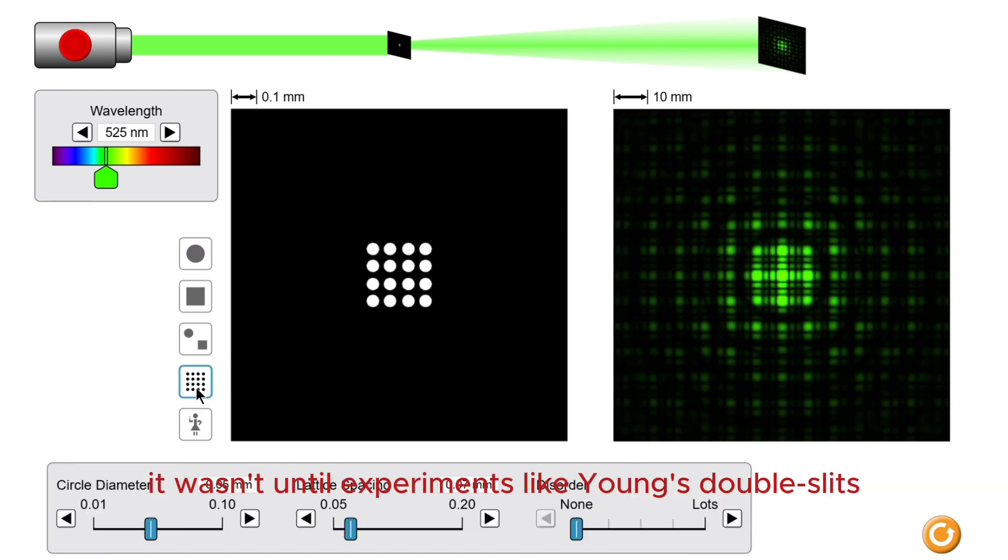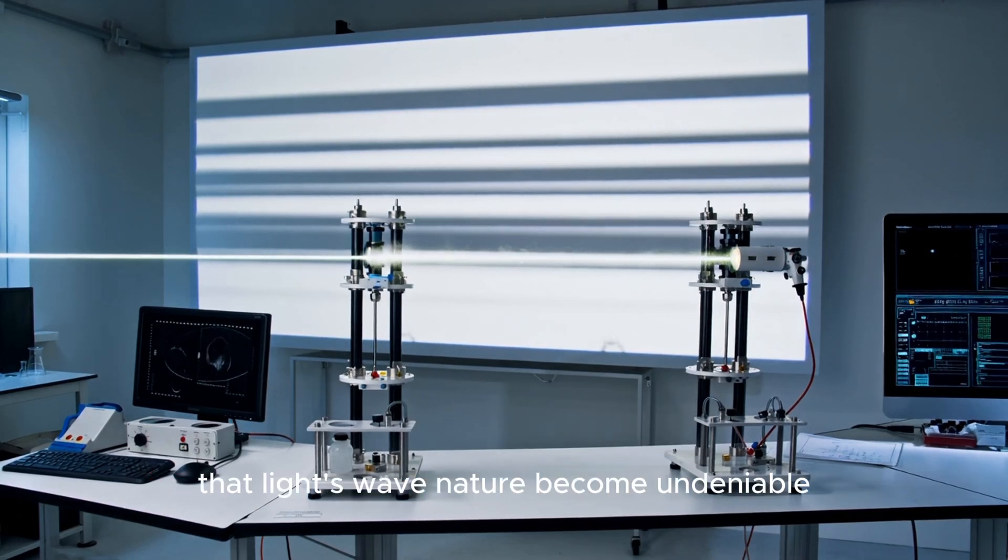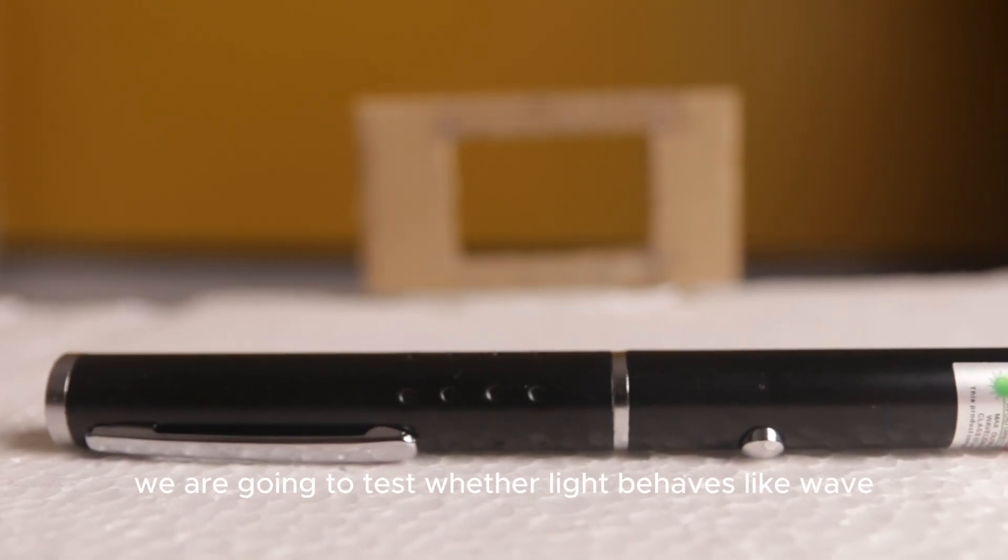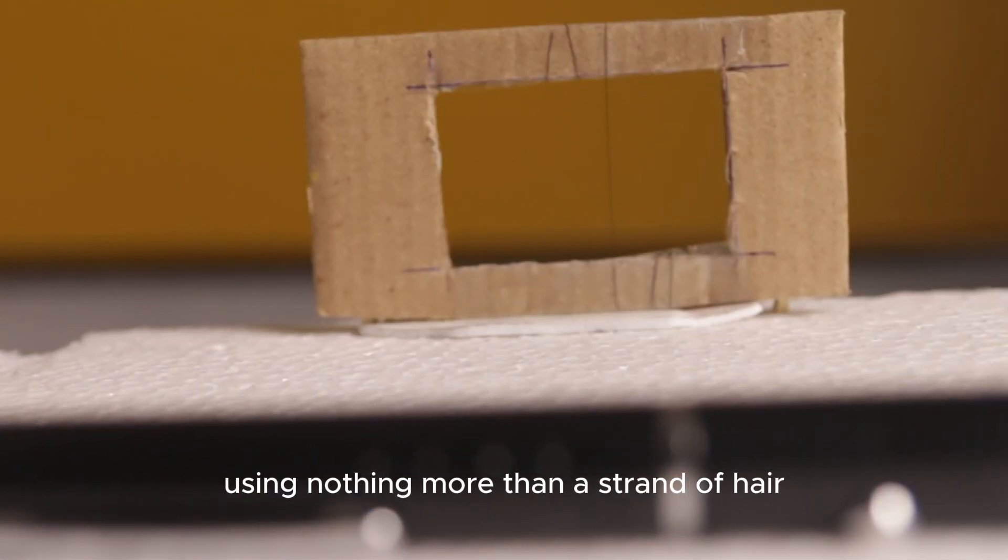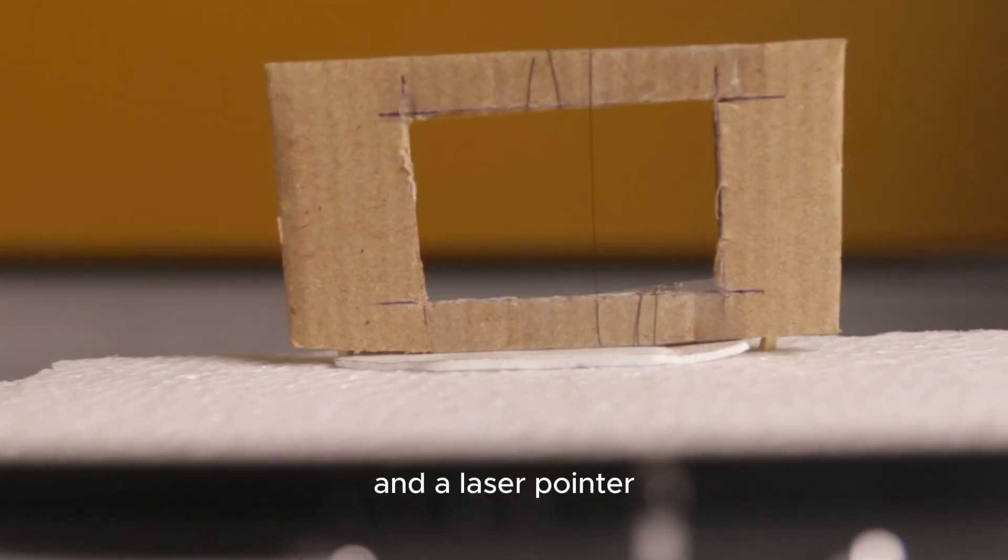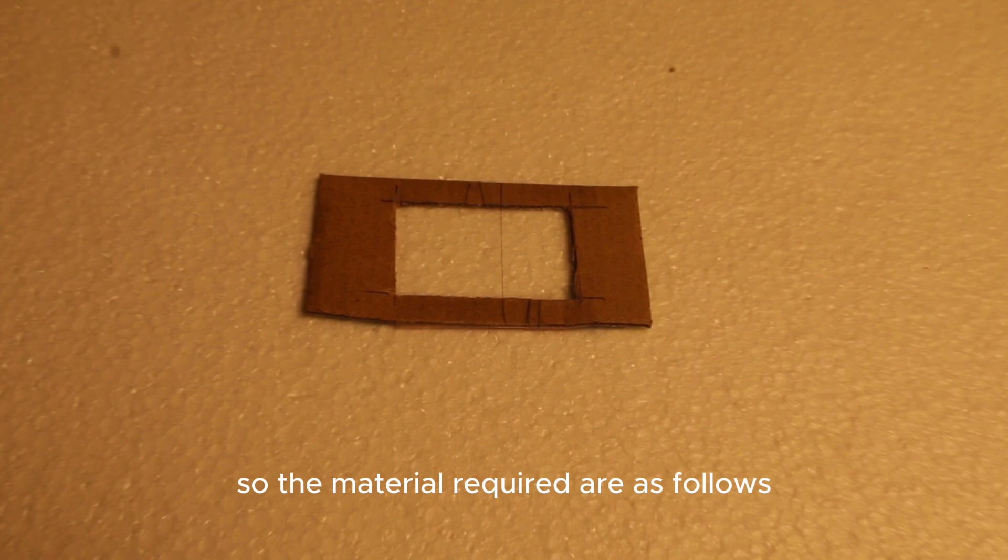It wasn't until experiments like the double slits that light's wave nature became undeniable. Today we are going to test whether light behaves like a wave using nothing more than a strand of hair and a laser pointer. So the materials required are as follows.